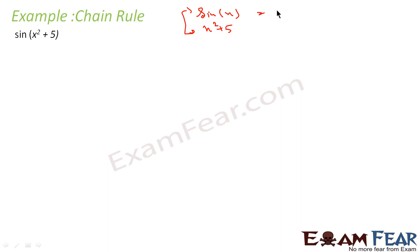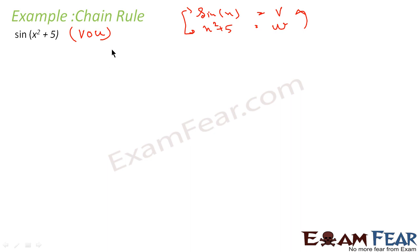So, if I assume this part as v and this part as u, my function is v of u. You take u first and then find v of this. So, this becomes sine of x squared plus 5 is v of u, where my v is sine x and u is x squared plus 5. So, what I do here is I assume x squared plus 5 as t.